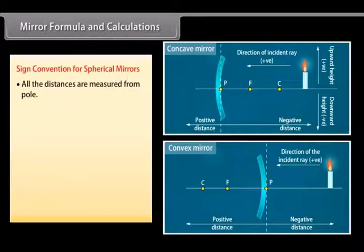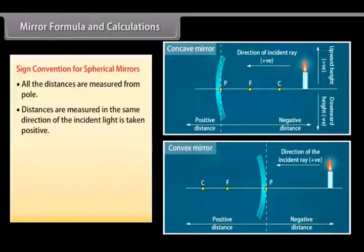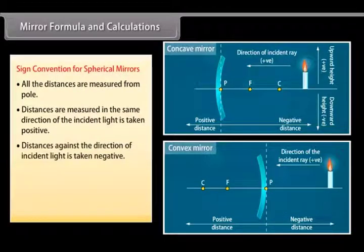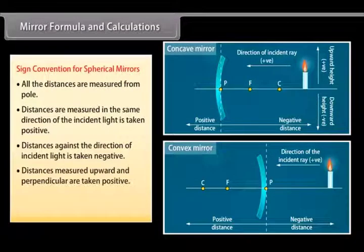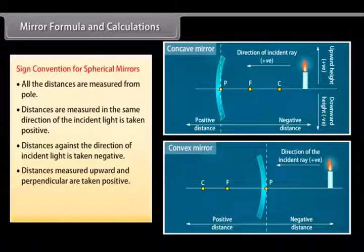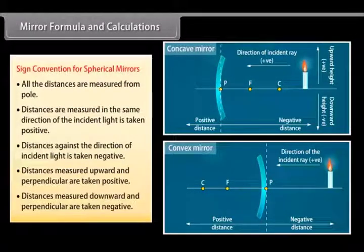Sign convention for spherical mirrors: All distances are measured from the pole. Distances measured in the same direction as incident light are taken as positive. Distances measured against the direction of incident light are taken as negative. Distances measured upward and perpendicular to the principal axis are taken as positive, and those measured downward are taken as negative.